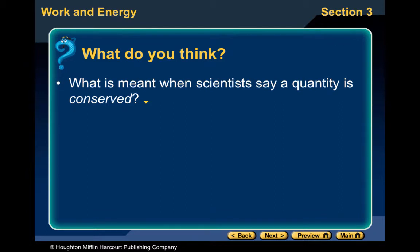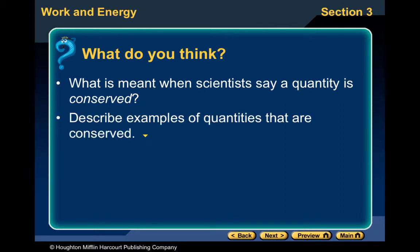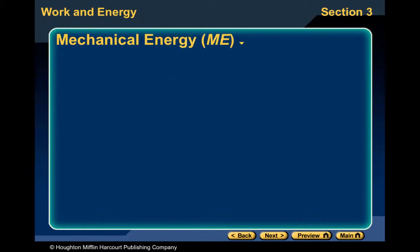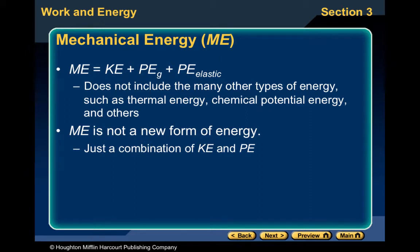What is meant when scientists say a quantity is conserved? Think about different quantities that are conserved and whether they are always conserved. Mechanical energy is the sum of all kinetic energy, all gravitational potential energy, and any elastic potential energy. It does not include thermal energy, chemical potential energy, or other types. Mechanical energy is not a new form — it's simply the sum of all kinetic and potential energies.